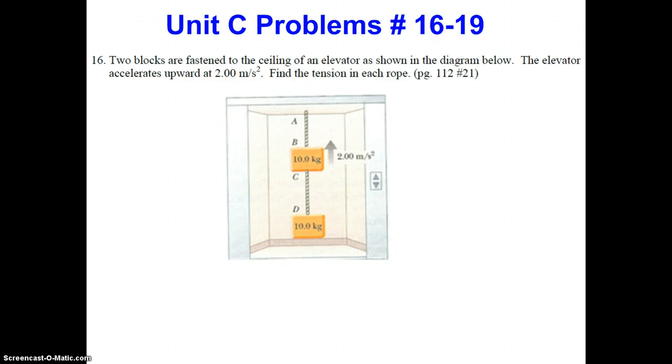For problem 16, we have two blocks that are fastened to the ceiling of an elevator shown in the diagram below. The elevator accelerates upward at 2 meters per second squared, so we know that's A. Find the tension in each rope.